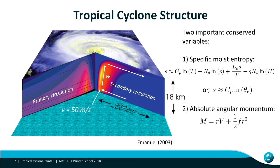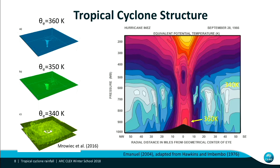To understand the dynamics and energetics of tropical cyclones, there are two important conserved variables. The first is absolute angular momentum: M equals the radius times the azimuthal velocity plus one-half F R-squared. In a tropical cyclone, M is largely conserved, so as the air spirals inward and the radius decreases, the azimuthal velocity increases quite rapidly. The second conserved variable is specific moist entropy, which you can also think of as equivalent potential temperature — related by S being proportional to the natural log of theta-E — a function of temperature, pressure, and humidity.